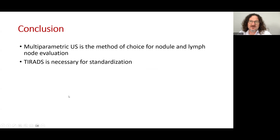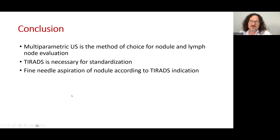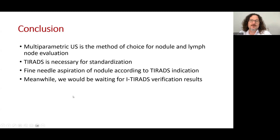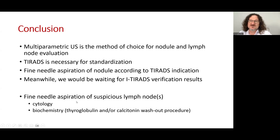In conclusion, multiparametric ultrasound is the method of choice for nodule and lymph node evaluation. TIRADS is necessary for standardization and for fine needle aspiration indication decisions. We are waiting for AI TIRADS verification results. Fine needle aspiration of suspicious lymph nodes, particularly in the central compartment, is necessary when there is suspicion, and should include cytology and biochemistry of thyroglobulin and/or calcitonin washout procedure.